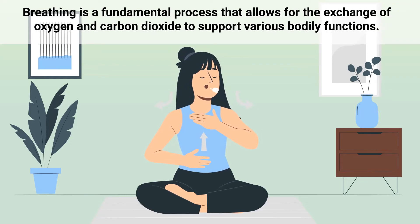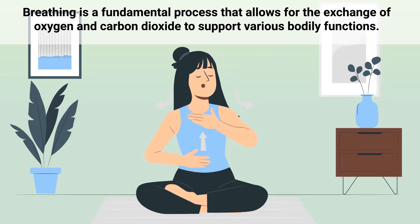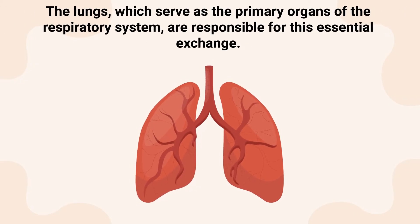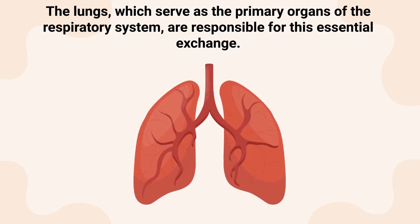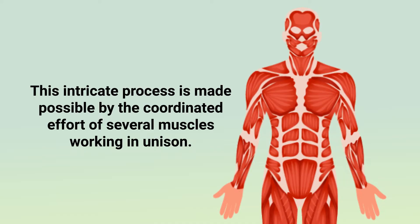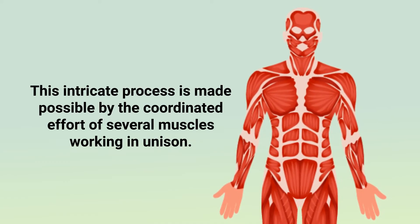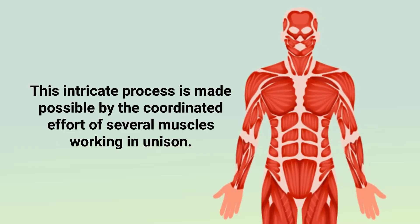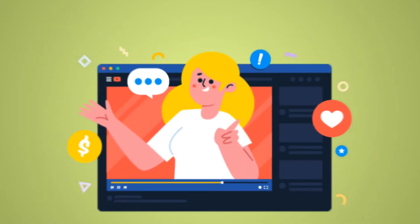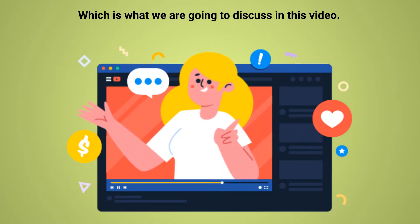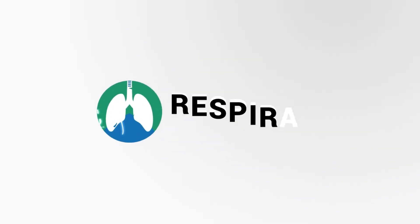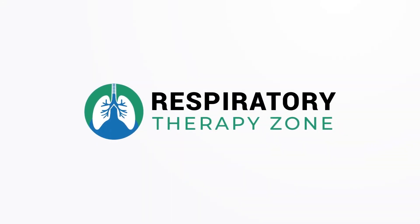Breathing is a fundamental process that allows for the exchange of oxygen and carbon dioxide to support various bodily functions. The lungs, which serve as the primary organs of the respiratory system, are responsible for this essential exchange. However, this intricate process is made possible by the coordinated effort of several muscles working in unison, which is what we are going to discuss in this video, including the muscles involved in the process of respiration.